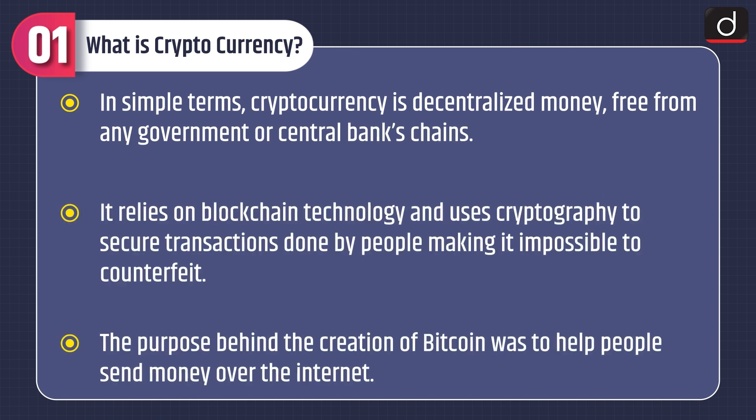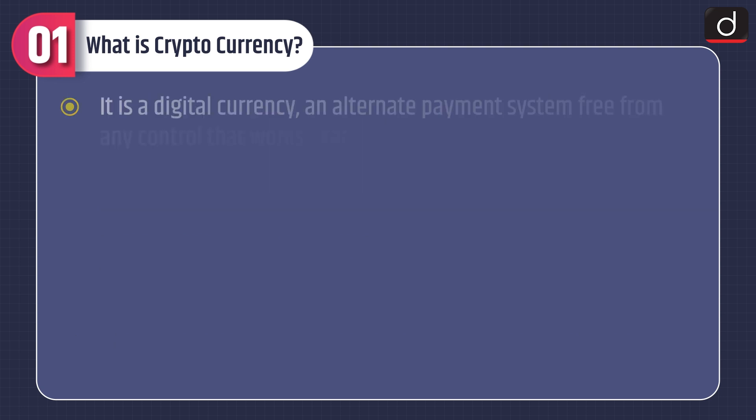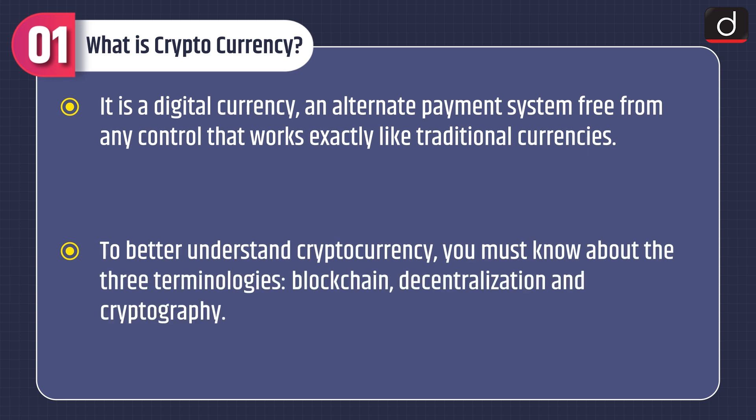In simple terms, cryptocurrency is decentralized money free from any government or central bank's chains. It relies on blockchain technology and uses cryptography to secure transactions done by people, making it impossible to counterfeit. The purpose behind the creation of Bitcoin was to help people send money over the internet. It is a digital currency, an alternate payment system, free from any control that works exactly like traditional currencies.